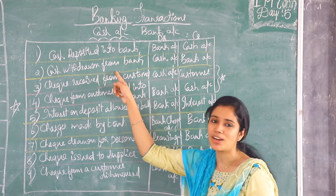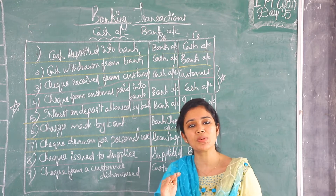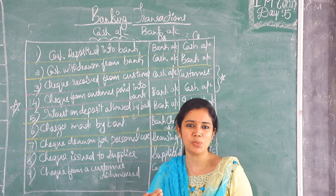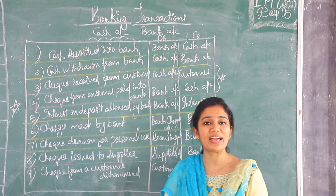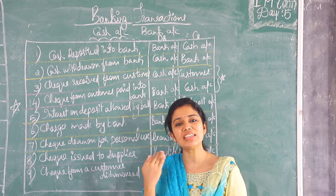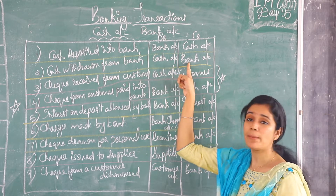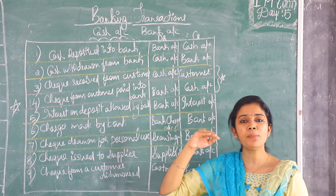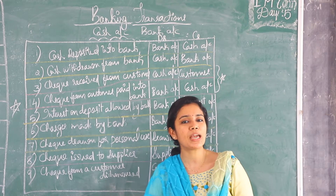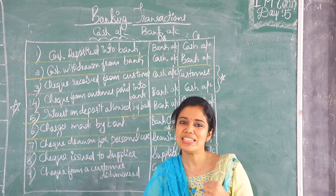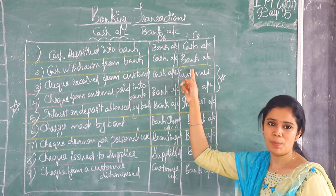The opposite happens with regard to the next transaction, which is cash withdrawn from bank — it is just the opposite of cash deposited into bank. When cash is withdrawn from the bank, cash in hand increases, so it has to be debited. That is why we debit cash. And what happens to the bank account? The amount of money available in the bank account comes down, so it has to be credited. The entry is: cash account debit to bank account.